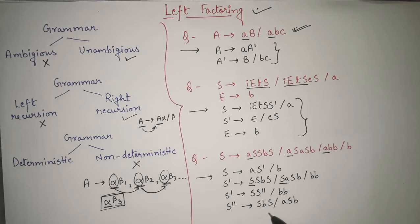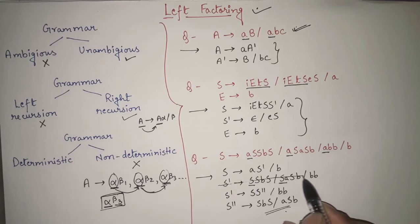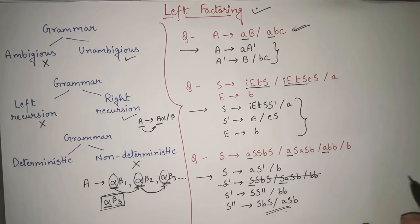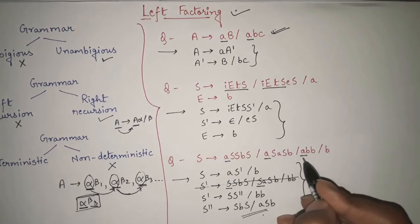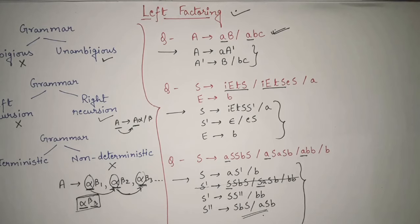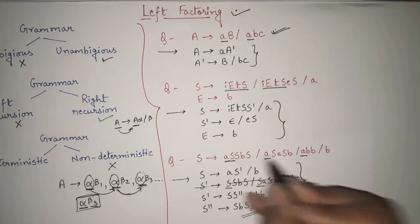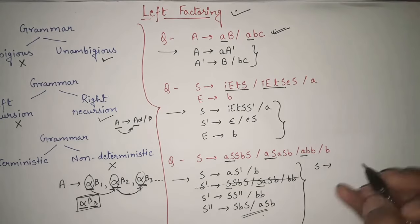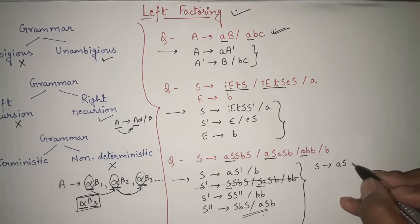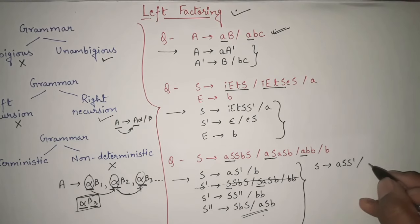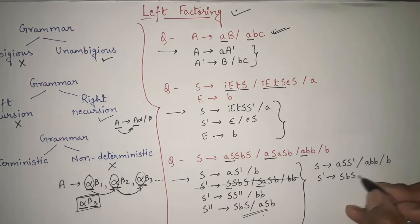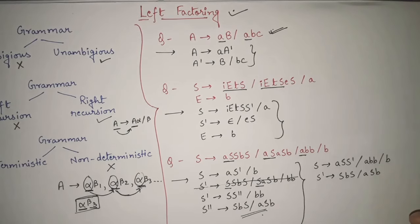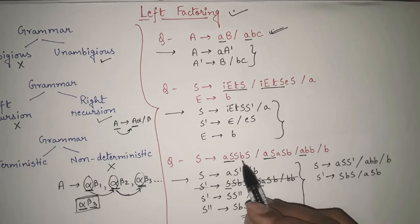Alternatively, there is another method. Without introducing the intermediate step, you could have taken 'aS' as the common prefix directly from the original productions. So S → aSS′ | aBB | B, where S′ → SbS | ASb. This is also a valid approach — there are multiple ways to apply left factoring. As long as there is no non-determinism remaining, the grammar is deterministic.